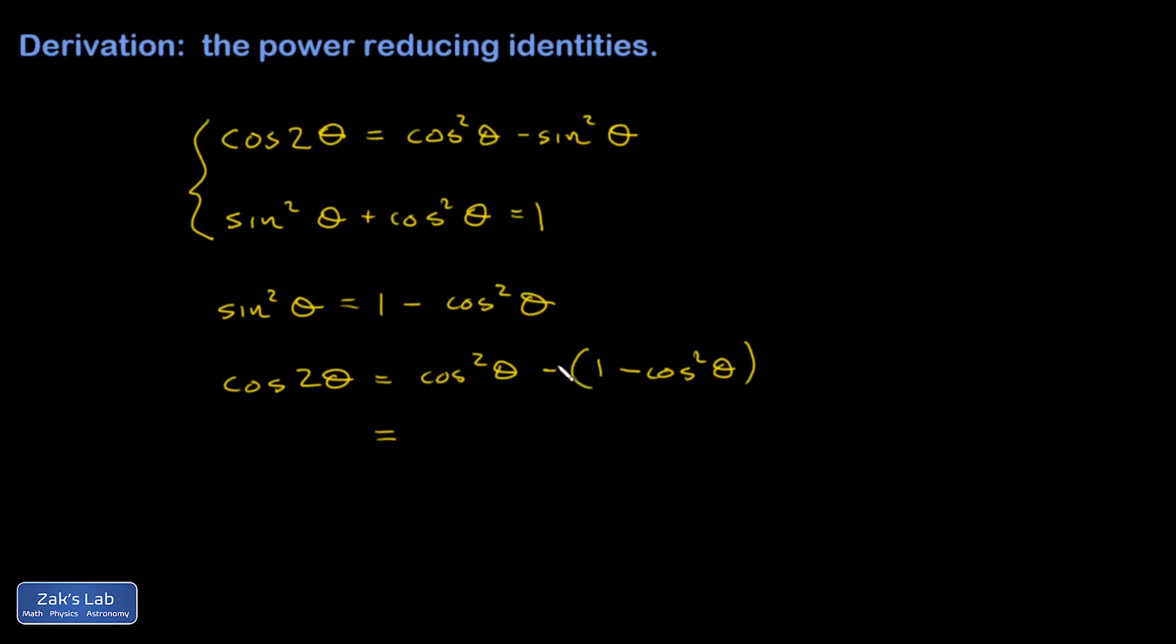Another way to look at it is I distribute a factor of negative one into that binomial. That gives me 2 cosine squared θ minus 1.